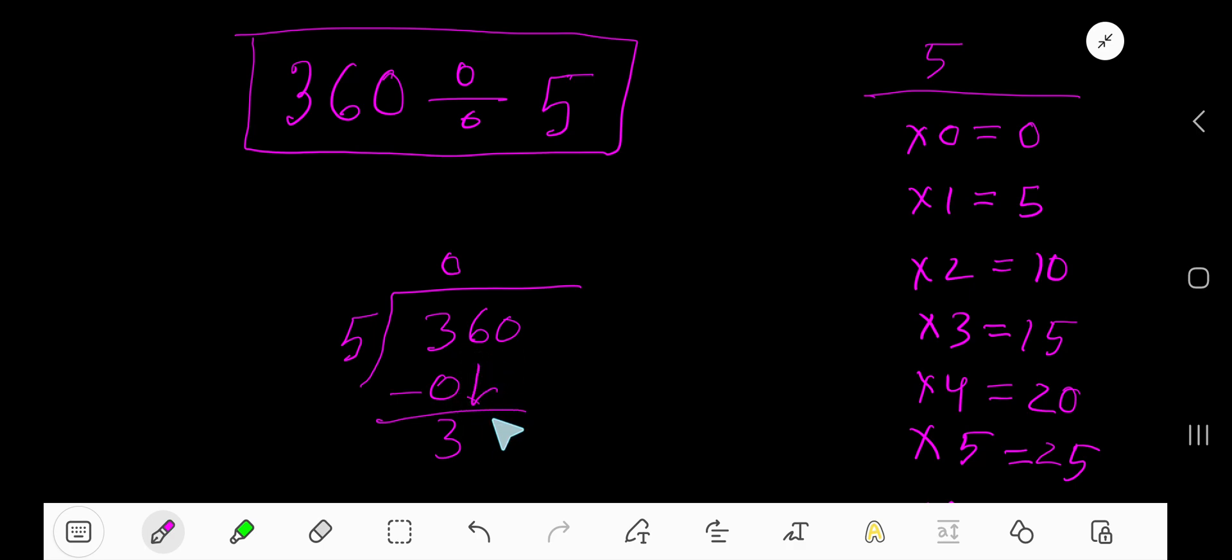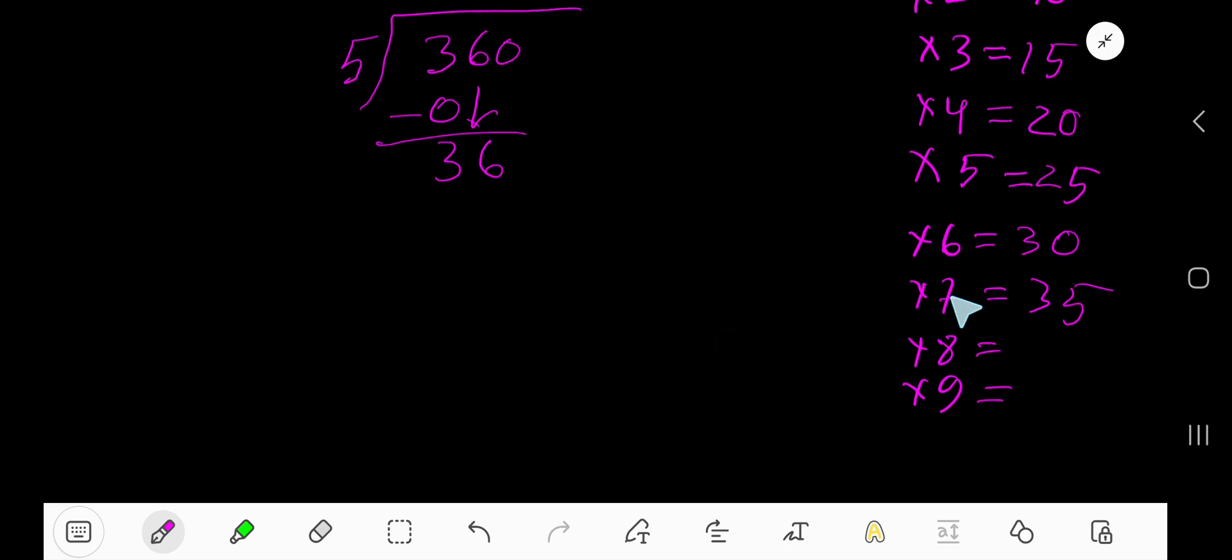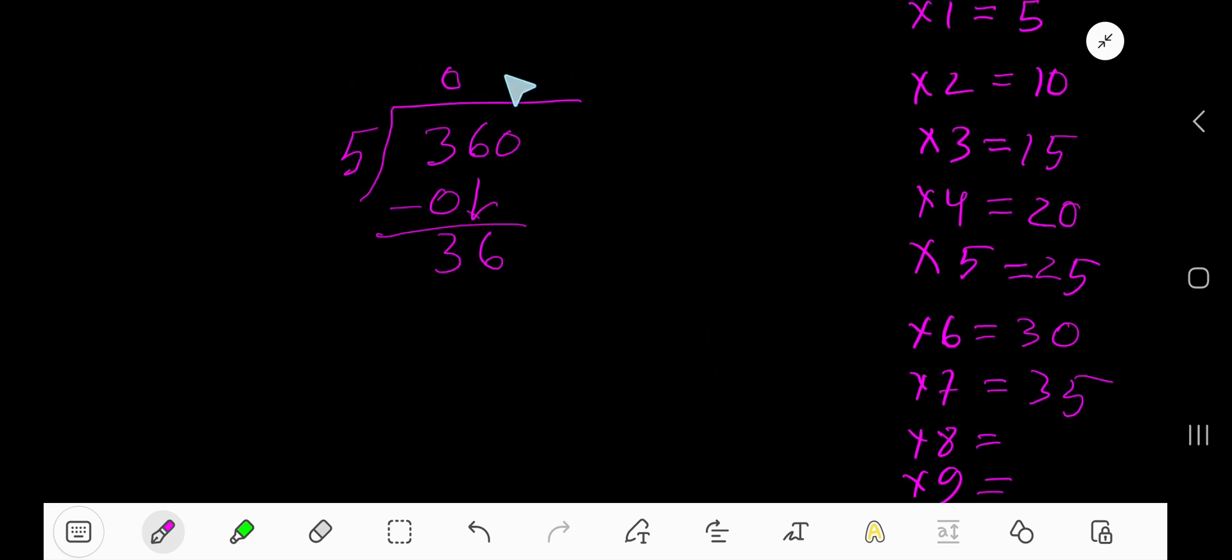Bring down the first digit, 6. 5 goes into 36 how many times? Look, 5 times 7, 35, which is nearly 36.